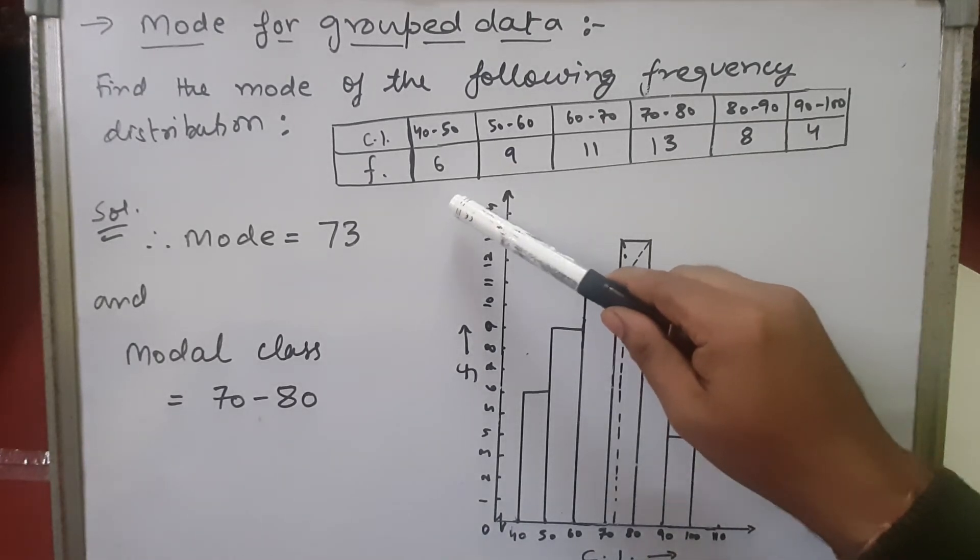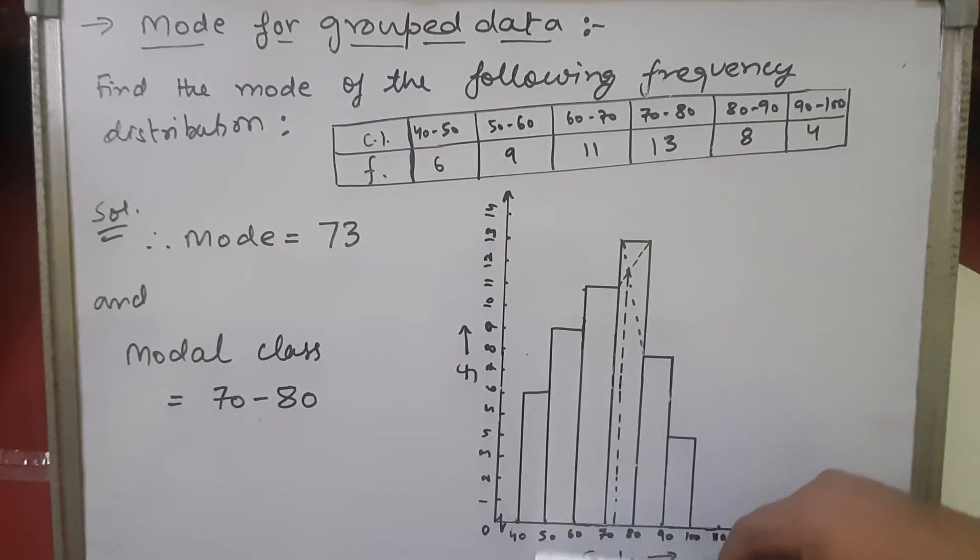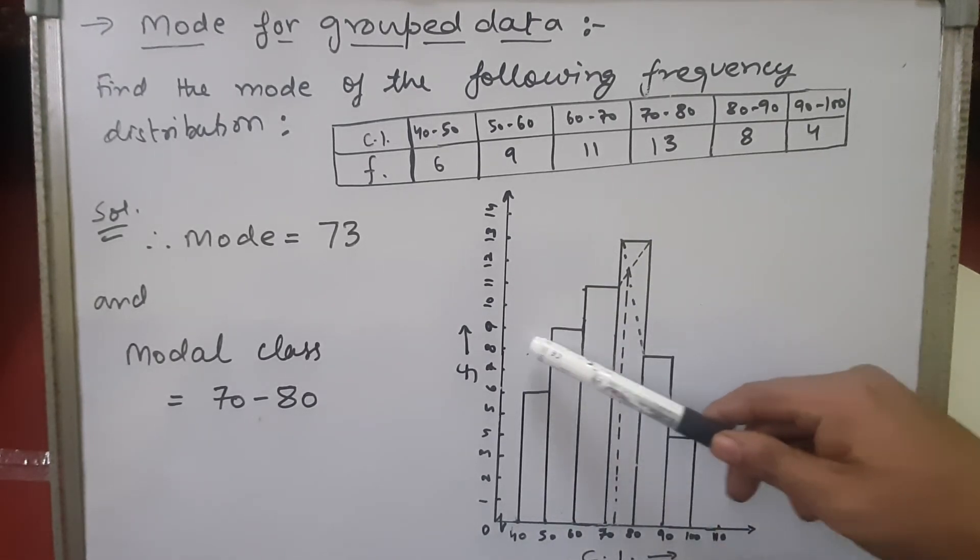For the first class, which is 40 to 50, the frequency is 6. That means the rectangle on 40 to 50 class interval will go up to 6. Then from 50 to 60, the frequency is 9. You can see here the frequency is 9.